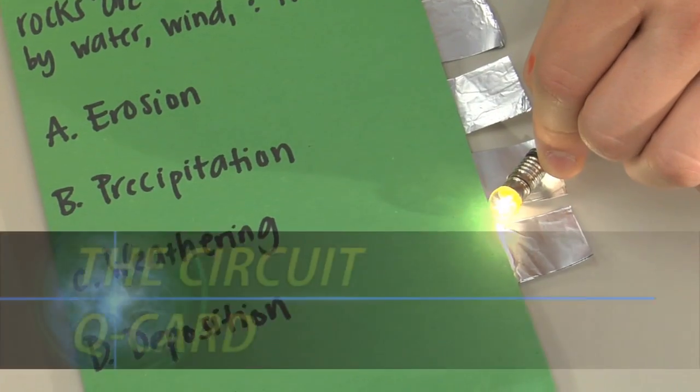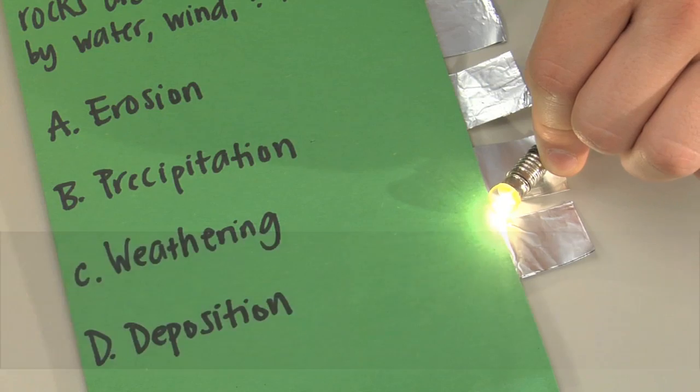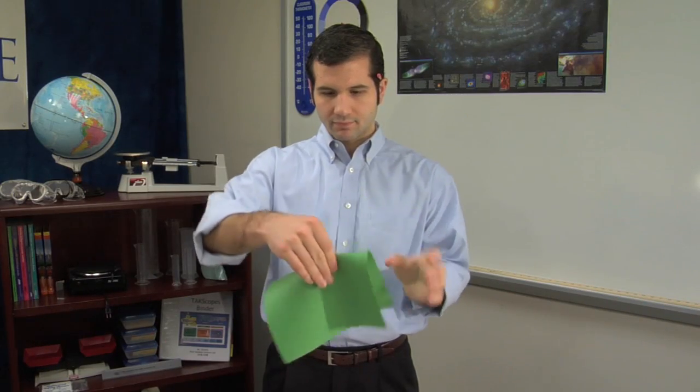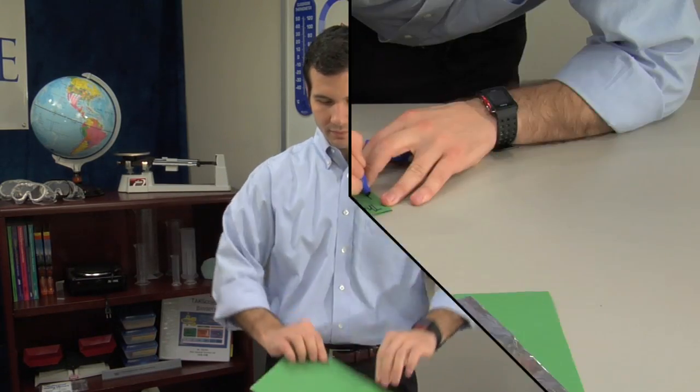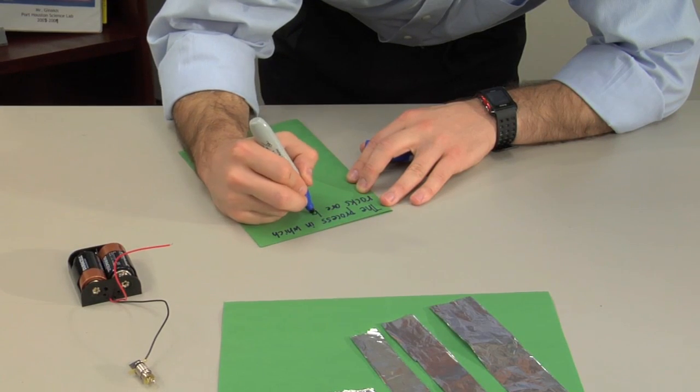For the second part, we'll build a circuit question card. Begin by folding a piece of construction paper to form a card. On the outside, write a question and four answer choices.